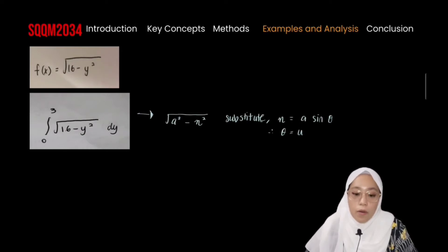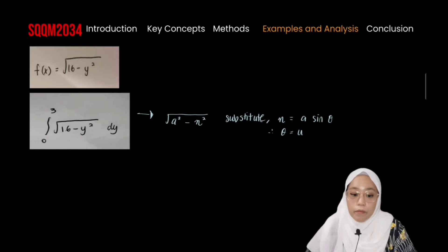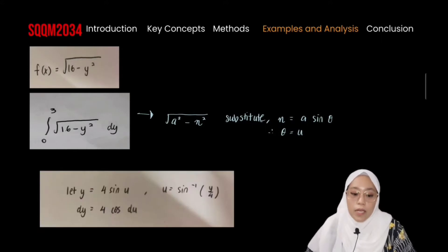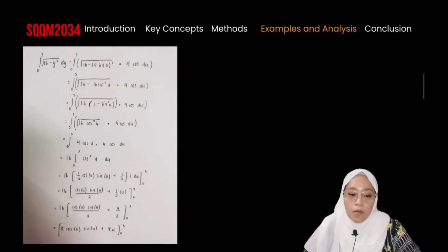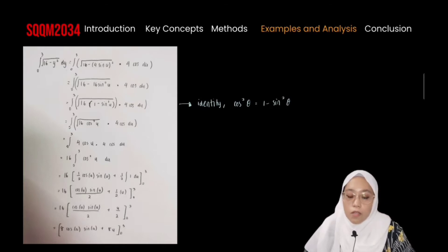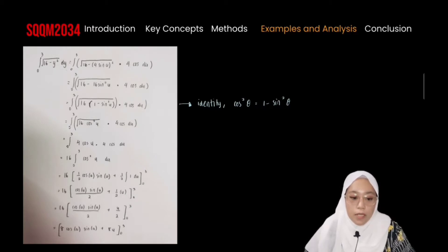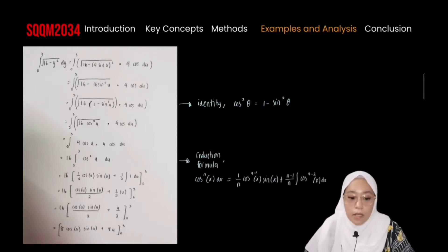Using theta as u, we let y = 4 sin u, so dy = 4 cos u du. We also find the new bounds using sin inverse of y/4. We factorize 16 out and get 1 − sin² u. Using the identity cos² θ = 1 − sin² θ, we substitute and then apply the reduction formula since we have cos² u. After applying the reduction formula, we get 8 cos u sin u + 8u, integrated from 0 to the upper bound.